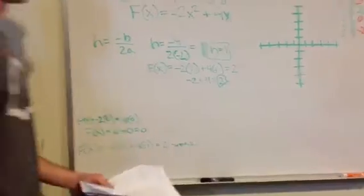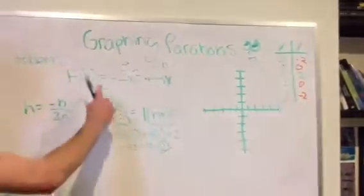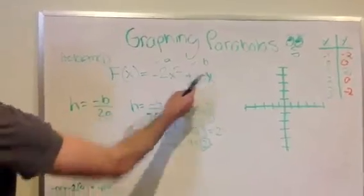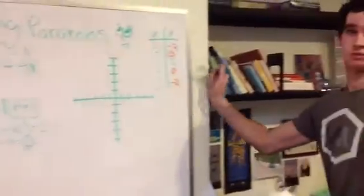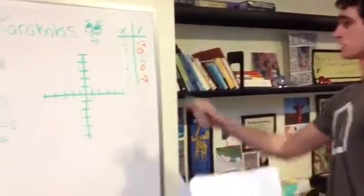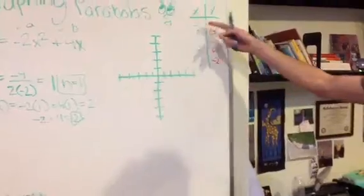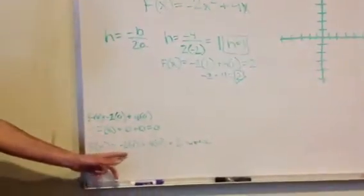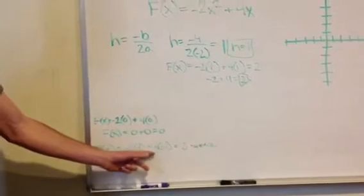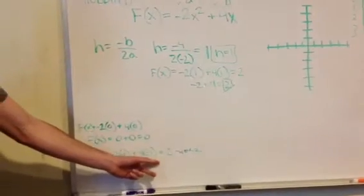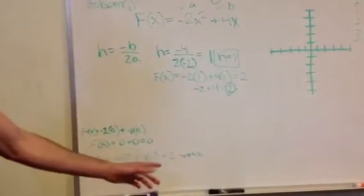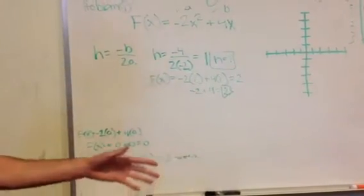All that we're really doing is just taking our x values, plugging them back into the original equation so that we can find our y values so that we can graph the parabola. We took 0, we did 0, and now we're doing negative 1. fx equals negative 2 times negative 1 plus 4 times negative 1 equals 2 minus 4, which equals negative 2.